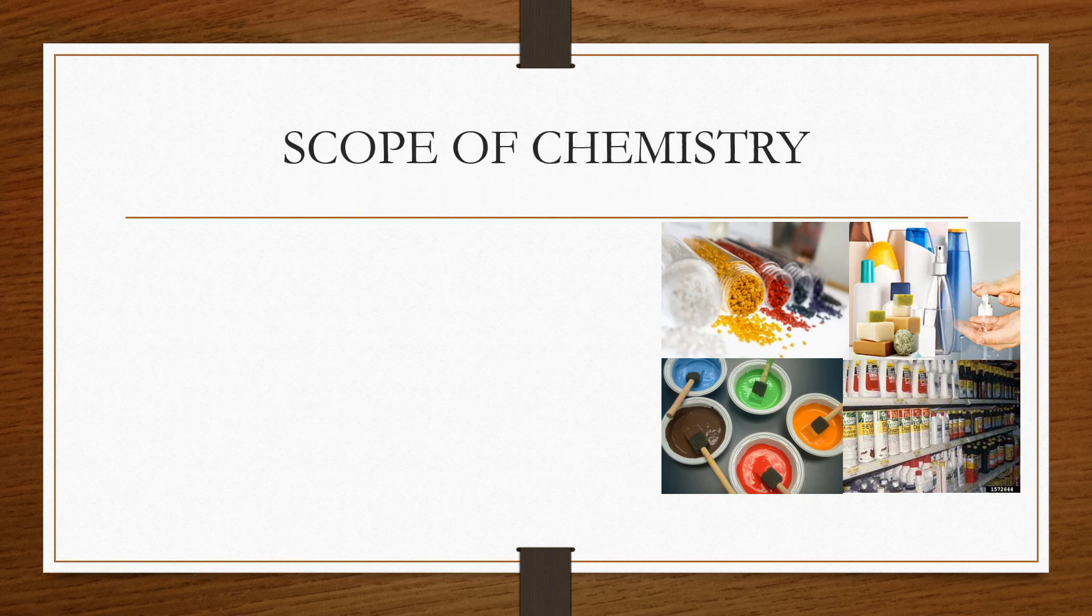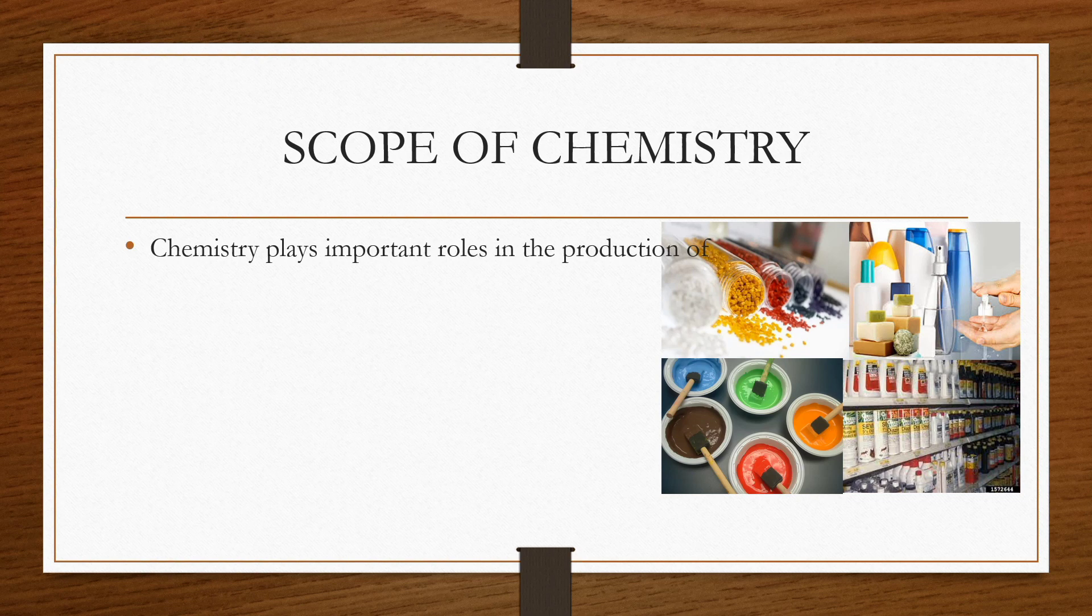After this, we will see the chemistry scope. Chemistry plays important roles in the production of petrochemical products. Petrochemical products are chemicals made from petroleum.